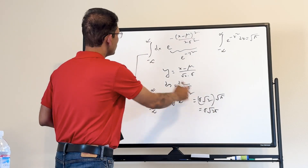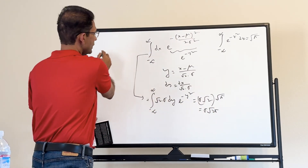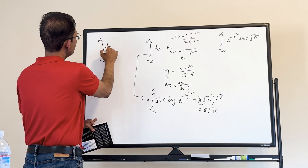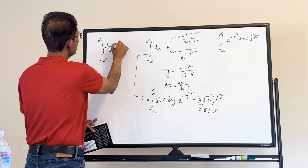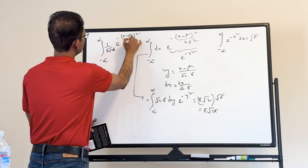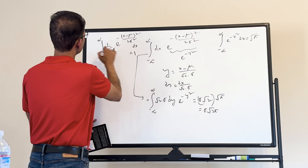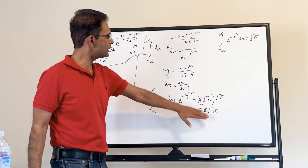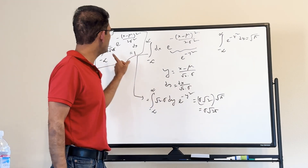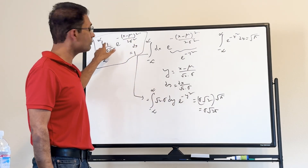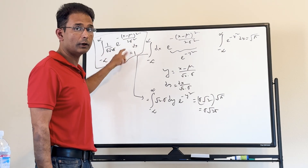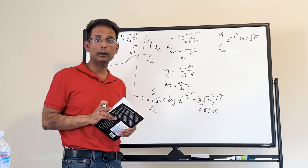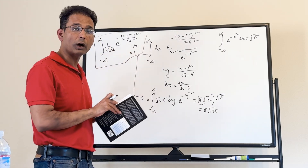Dividing both sides by sigma times square root of 2 pi, we get: the integral from minus infinity to plus infinity of one over sigma square root of 2 pi times e to the minus (x minus mu) squared over two sigma squared dx equals one. This expression — one over sigma square root of 2 pi times the exponential — is called the normalized Gaussian or standard normal, because the area under the curve equals one.